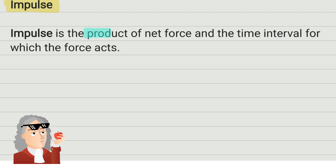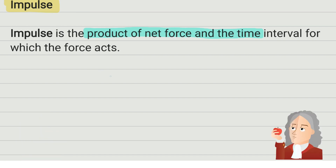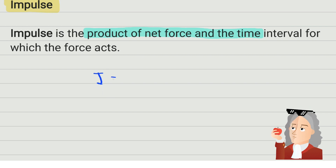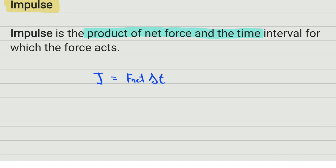For impulse, the symbol we are going to use is the capital letter J. Impulse is equal to the product of net force and time. This is impulse, and it is a vector quantity.